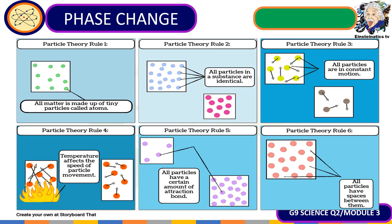Let us have a quick review on the particle theory of matter so we can better understand the phases of matter. First, all matter is made up of particles called atoms. Second, all particles in a substance are identical. Third, all particles — whether solid, liquid, or gas — are in constant motion. Fourth, temperature affects the speed of particle movement: the higher the temperature, the faster the movement, and the lower the temperature, the slower the movement.